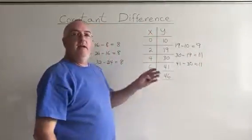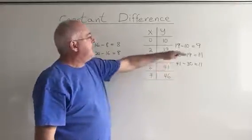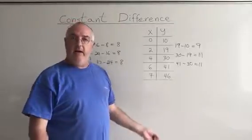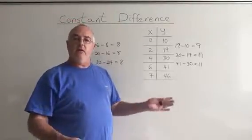41 minus 30 equals 11. I'm getting a very similar answer in each case and I'm able to say this is close enough so that I can assume that this is a linear relationship and then I go ahead and I find the equation of the straight line that goes with it.